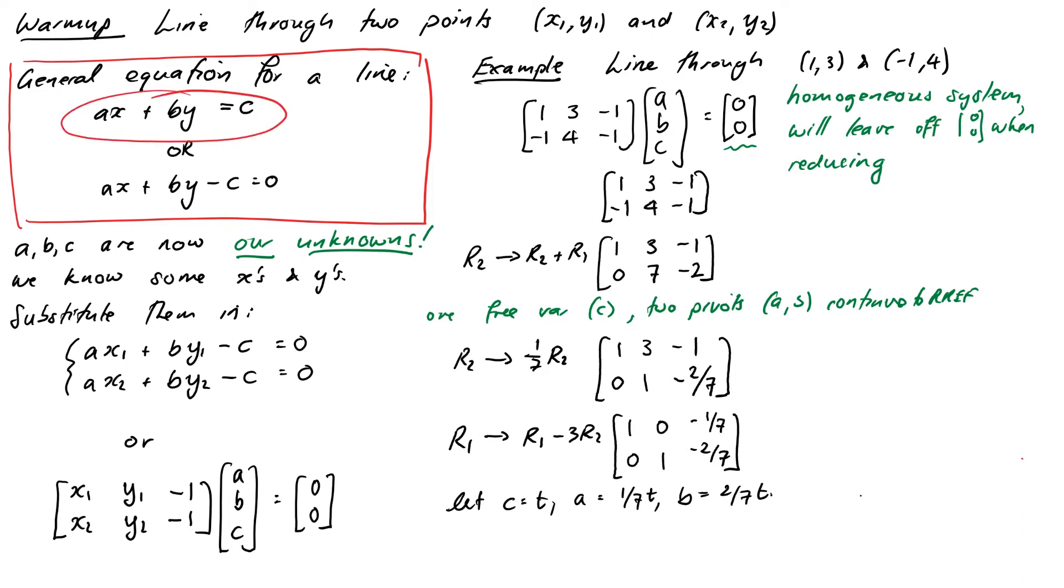Now it does make sense that we have infinitely many solutions here because any multiple of the equation ax plus by equals c also represents the same line. So we should have expected this to happen. So we can choose any t that we like and I think the obvious choice is going to be t equals 7 so we don't have any 7ths floating around anymore which will give us a equals 1, b equals 2 and c equals 7 which translates to our line equation being x plus 2y equals 7.